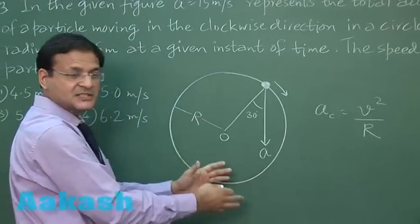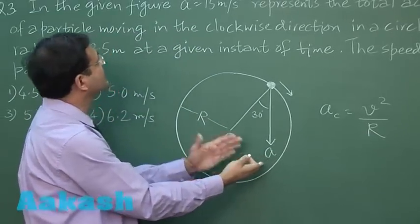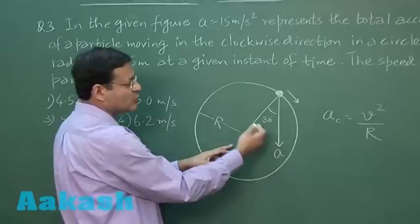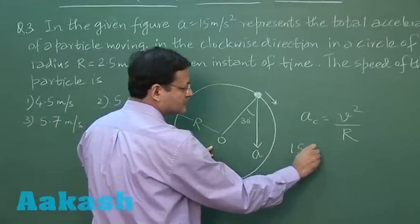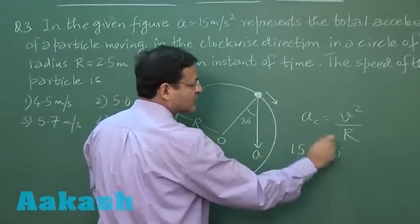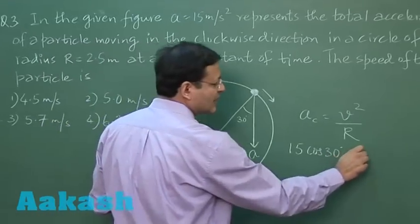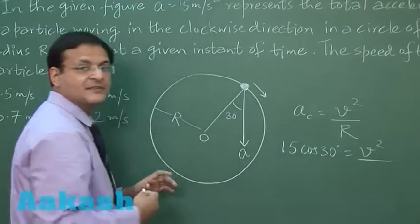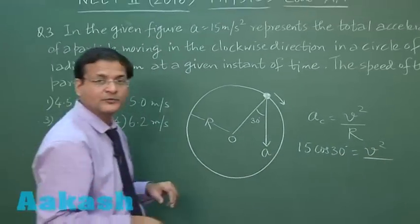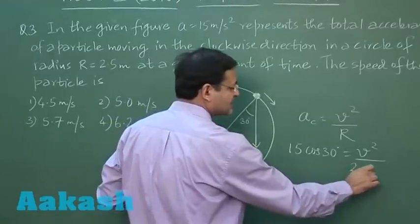So this centripetal acceleration is just the component of this total acceleration, which is 15. So 15 cos 30 degree is the centripetal acceleration, and this will be equal to v square by r. The radius value that has been given is 2.5 meter. You have to take all MKS system units.